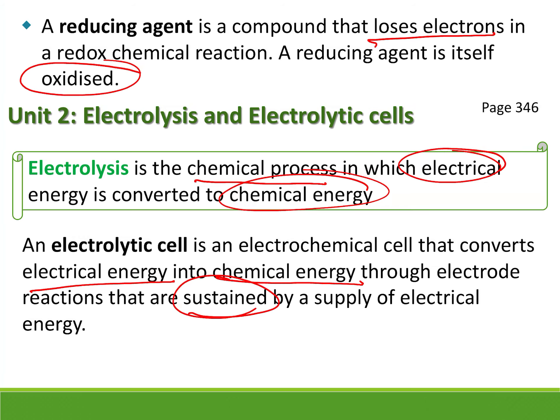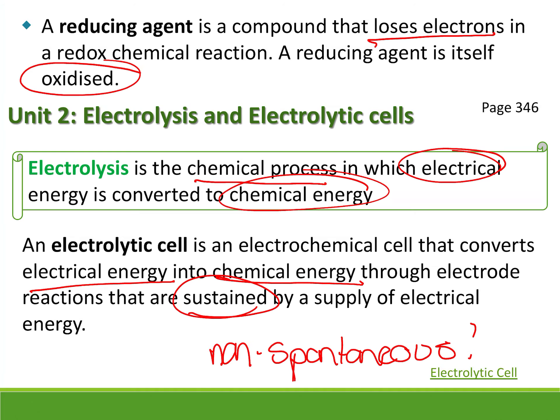Electrolytic cells operate through electrode reactions that are sustained by a supply of electrical energy. They are non-spontaneous — these are reactions that will not happen if you do not put in the electric current. That is very important to remember.